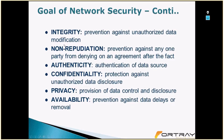Integrity prevents unauthorized data modification. Confidentiality protects against unauthorized data disclosure and privacy of data. Availability ensures prevention against data delay. Non-repudiation prevents any party from denying an agreement after the fact. Non-repudiation is achieved through logging — every network device generates logs recording exactly what happened, when, and who did it.